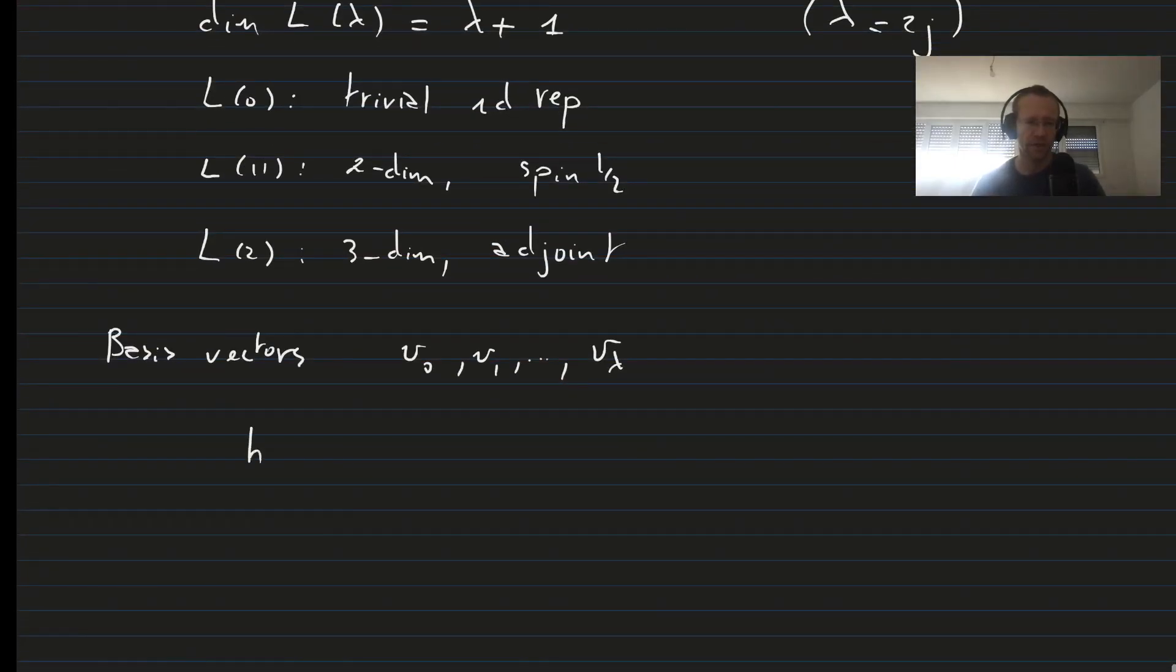And then H acting on VI is proportional to VI. It will be lambda minus 2I times VI. X on VI will be lambda minus I plus 1 times VI minus 1.